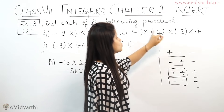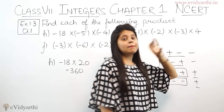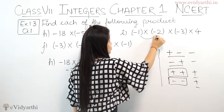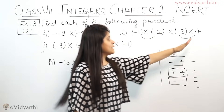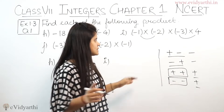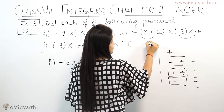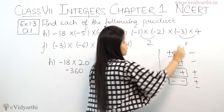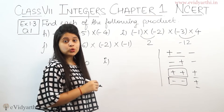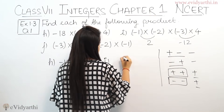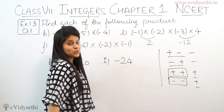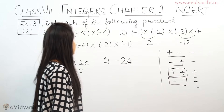Part I is minus 1 × minus 2 × minus 3 × 4. We have 4 numbers, so make pairs of two. First pair: 2 × 1 = 2, minus × minus = plus 2. Second pair: 4 × 3 = 12, minus × plus = minus 12. Now 12 × 2 = 24, and plus × minus = minus. So the answer is minus 24.